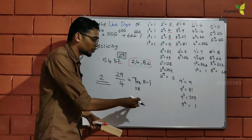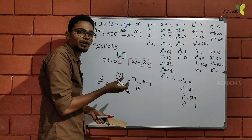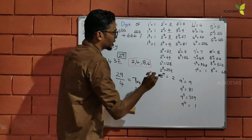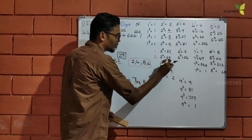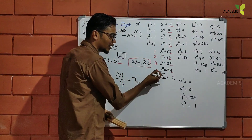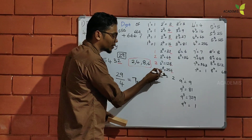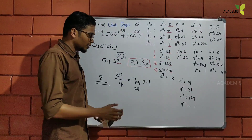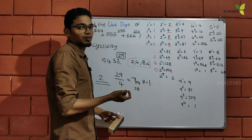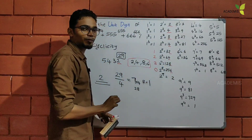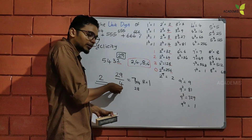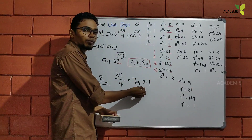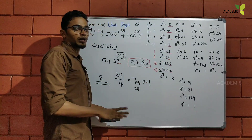We will add the remainder to the value. Remainder 1 corresponds to 2, remainder 2 corresponds to 4, remainder 3 corresponds to 8, remainder 4 corresponds to 6. If remainder is 0, it is divisible and we pick the 4th value. We divide the power by 4, get the remainder, and pick the corresponding unit digit value.